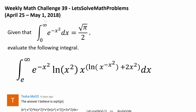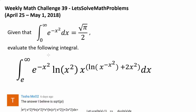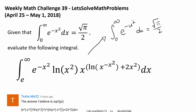We're given that the integral from 0 to infinity of e to the negative x squared dx equals square root of pi over 2. So maybe we should try to convert this integral into the form: integral from 0 to infinity of e to the negative u squared du, using some substitution. We don't know what the substitution will be yet, but the goal is to combine the terms in the integrand to get something like e to the negative u squared.